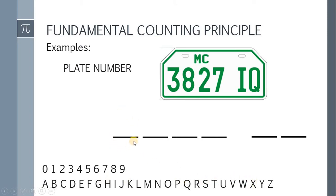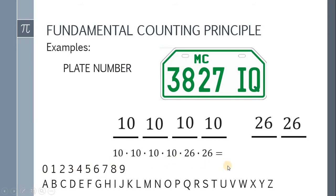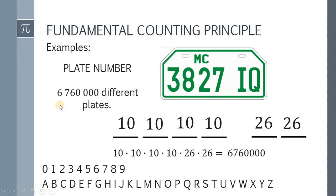So we have 10 options for the first digit, 10 for the second, 10 for the third, 10 for the fourth — no restriction. For the first letter, 26 options; for the second letter, also 26 options. According to the fundamental counting principle, the total number of plate numbers in this format is 10 times 10 times 10 times 10 times 26 times 26, which is equivalent to 6,760,000 different plates. And we're done.